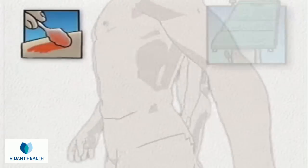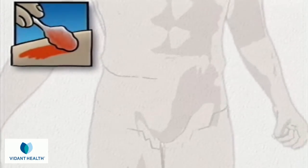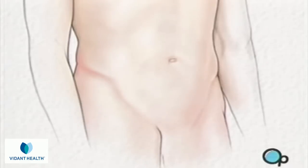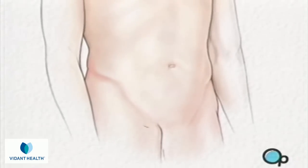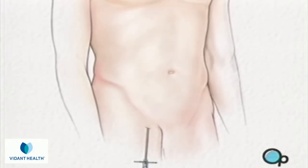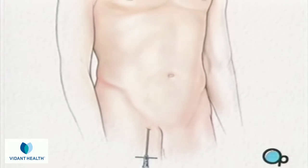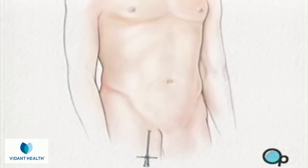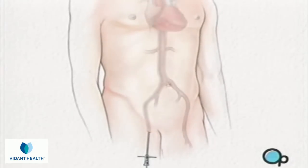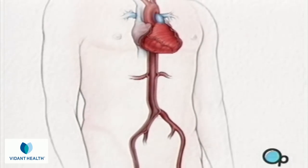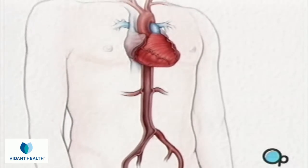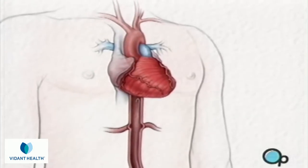To begin, your leg and groin are swabbed with an antiseptic solution. Then the doctor will make a small cut over the femoral artery in the upper part of the leg. A special needle is then inserted into the artery itself. Then a guide wire is carefully passed through the needle and gently pushed into the artery and upwards towards your chest.